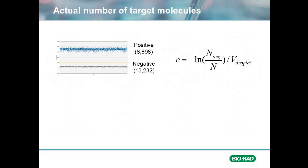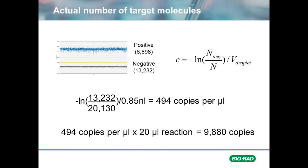Let's go back to our first example where we saw 6,898 positive droplets and 13,232 negative droplets. We can calculate the actual concentration by using Poisson's equation. The negative ln of negative droplets, 13,232 divided by the total number of droplets read, 20,130, and then divided by the volume of our droplets, which in this example is 0.85 nanoliters, would give us a concentration of 494 copies per microliter. We would multiply this value by the number of microliters in our reaction, in our case 20, and get a total value of 9,880 copies for the entire reaction.